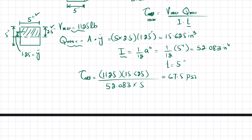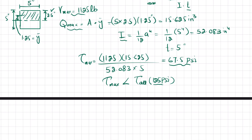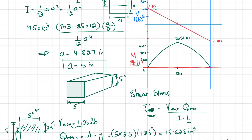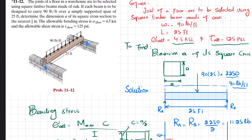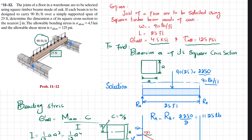The maximum shear stress is 67.5 psi, which is less than the allowable shear stress of 125 psi. Therefore, the timber beam with a square cross section of 5 inches width and 5 inches height is acceptable and can be used as the joist of a floor carrying 90 pounds per foot over a span of 25 feet.